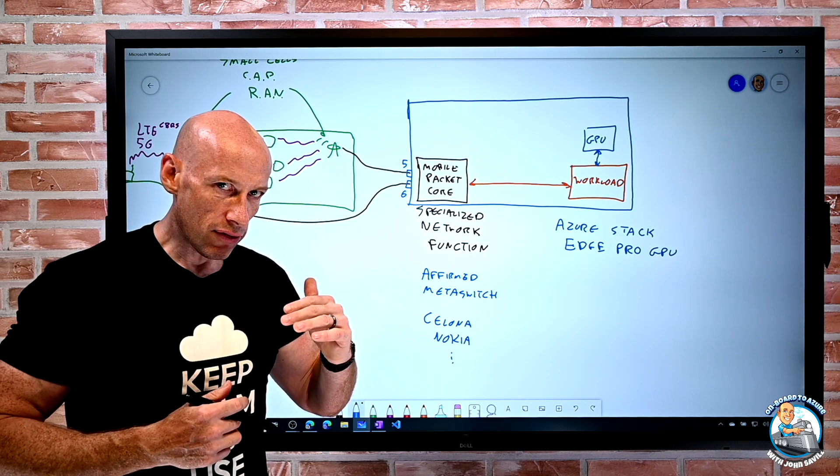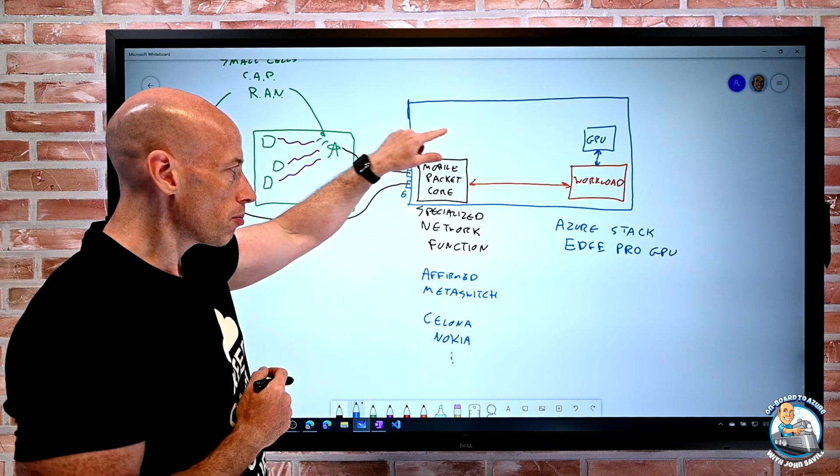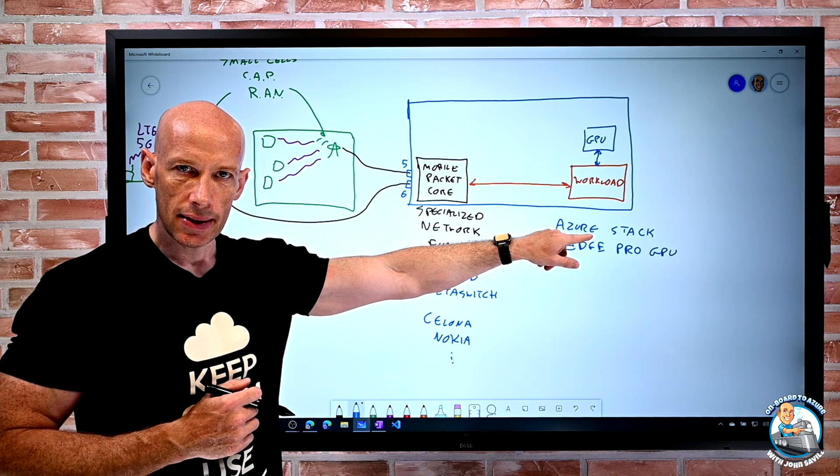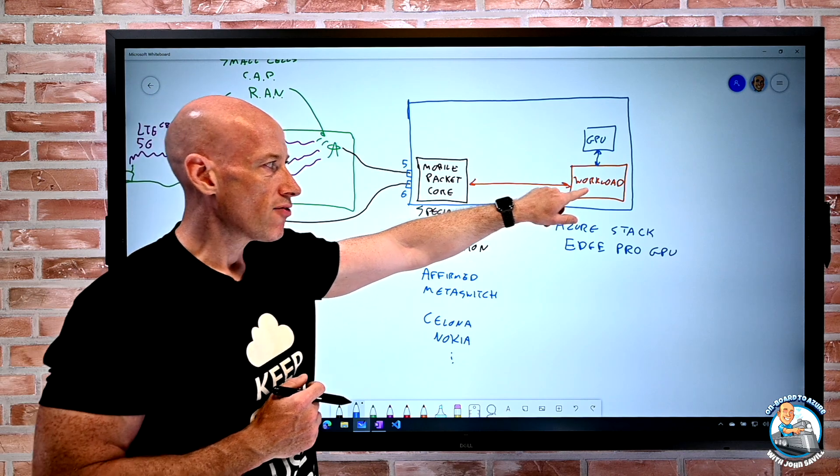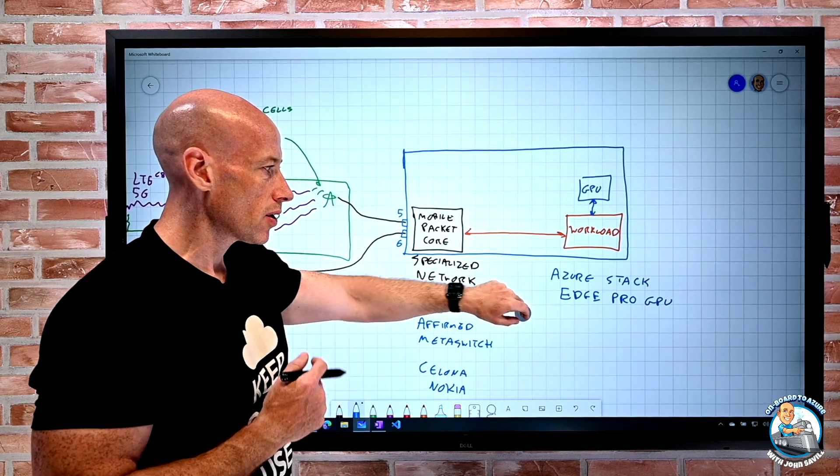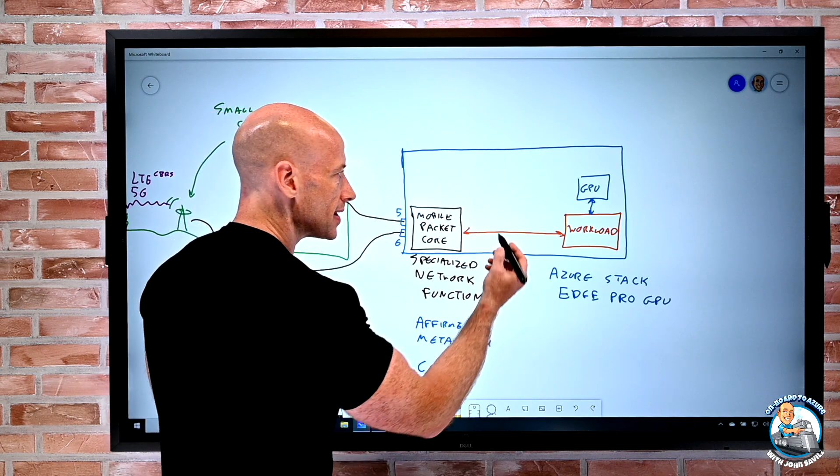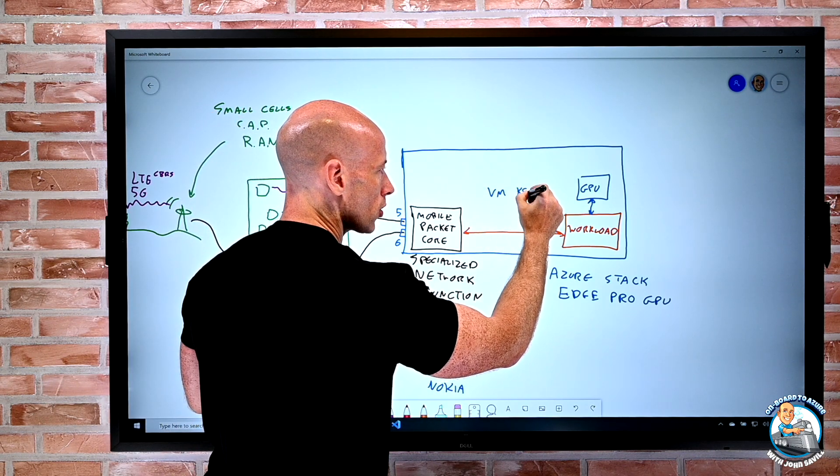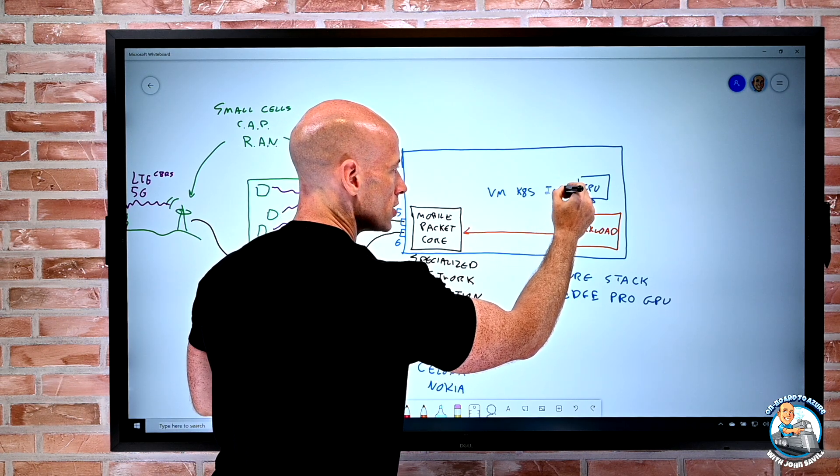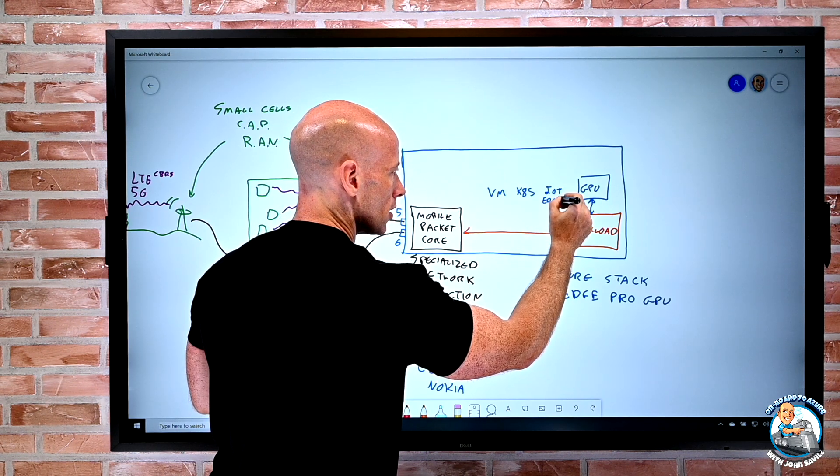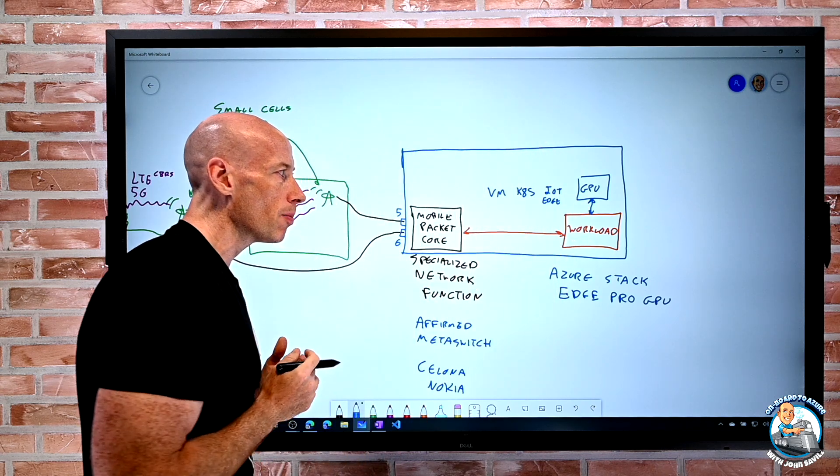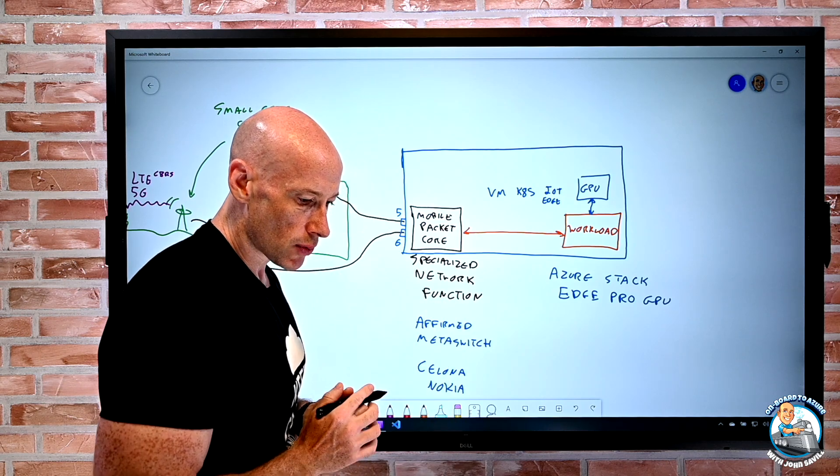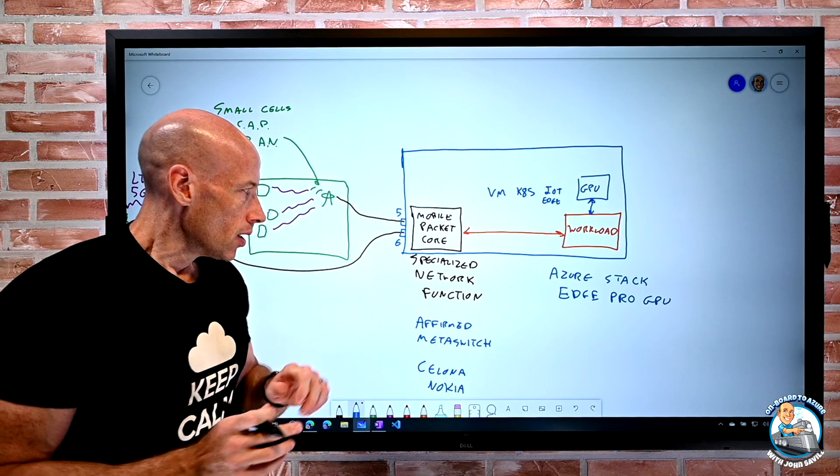So this now gives me a local platform on which I can deploy and run these mobile packet cores, but it's Azure Stack. So that means from a workload perspective, what do we have with Azure Stack? Well, fantastic. Yes, I can run virtual machines, but I can run Kubernetes. I can run IoT Edge that's talking to an IoT hub in the cloud. So I can suddenly run all of these workloads on my box.